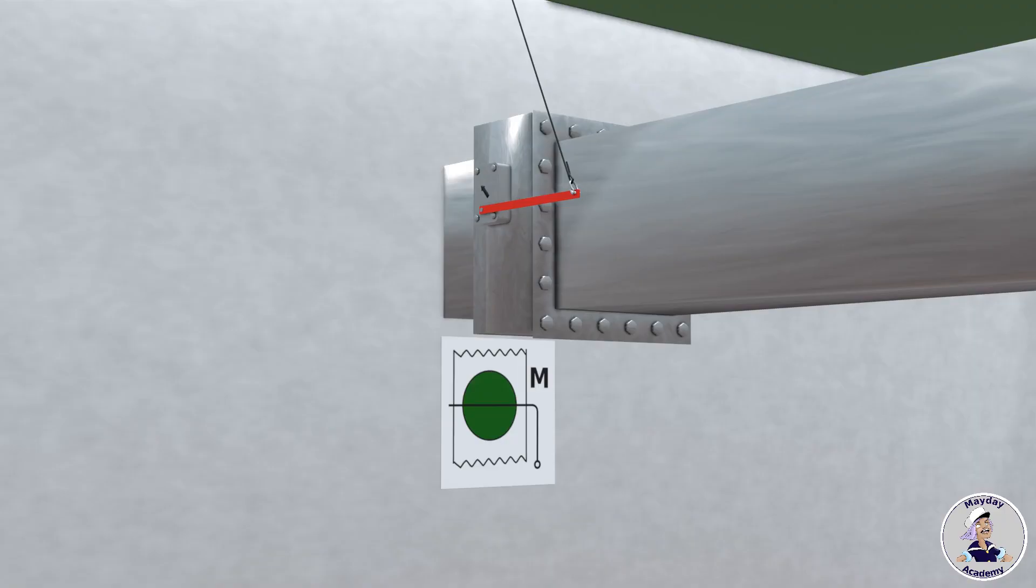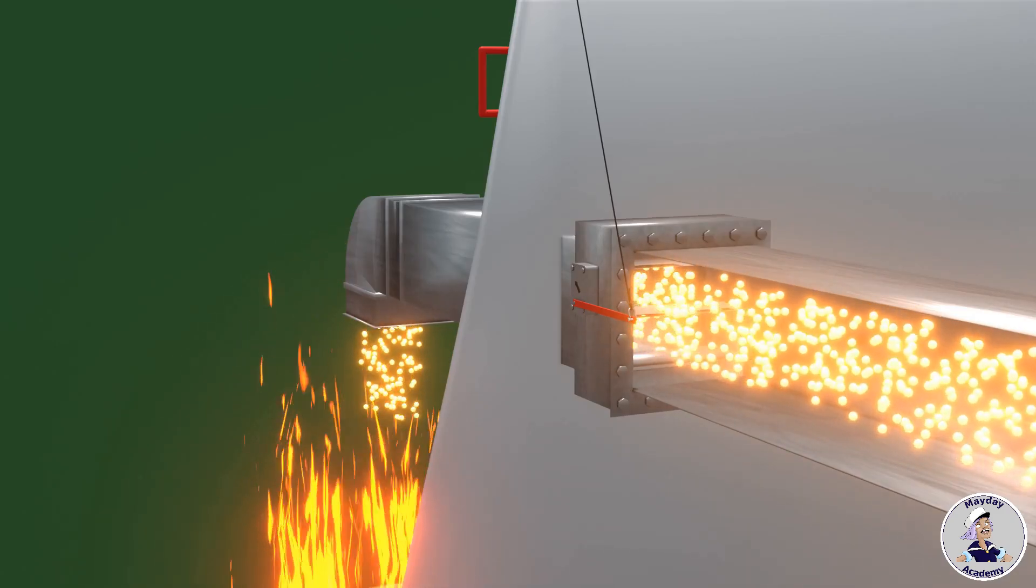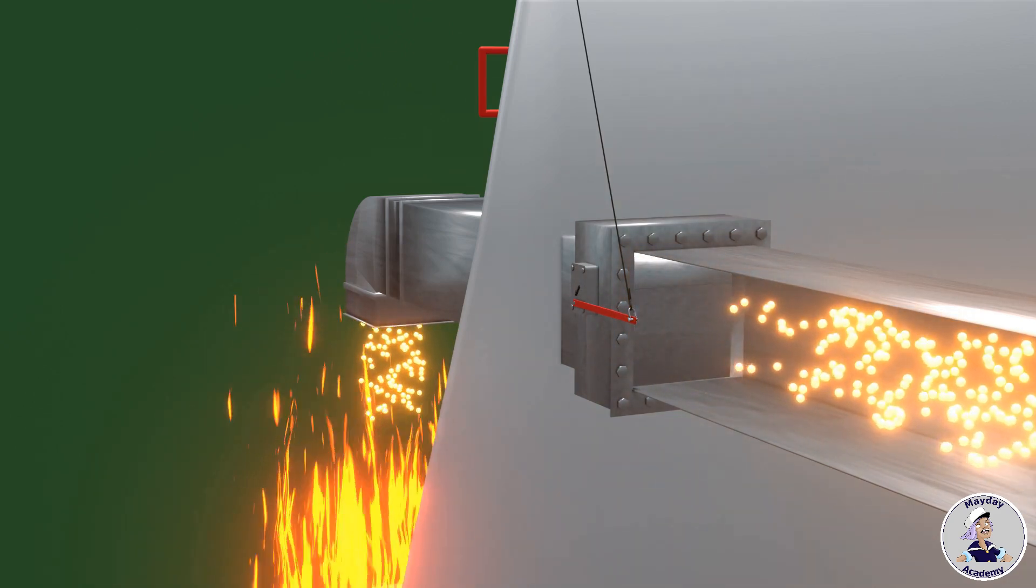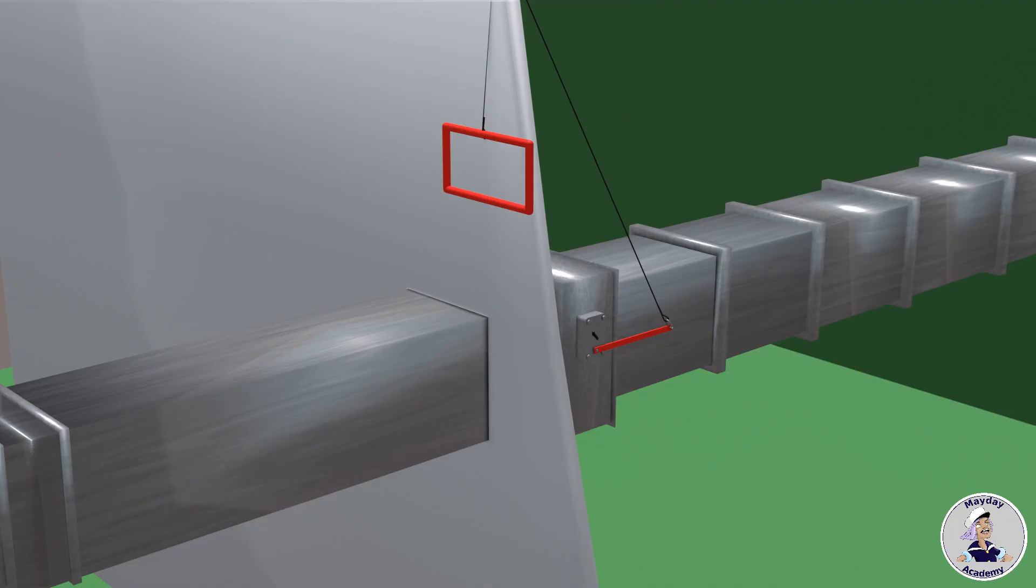Fire dampers, indicated by specific icons, must be installed in all ventilation ducts penetrating Class A compartments. These dampers close automatically when detecting heat, blocking passage between compartments. They can also be operated manually.